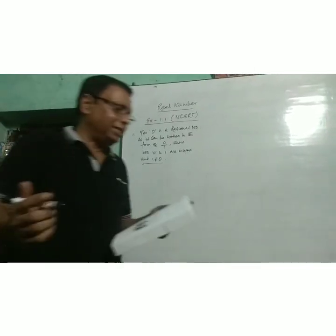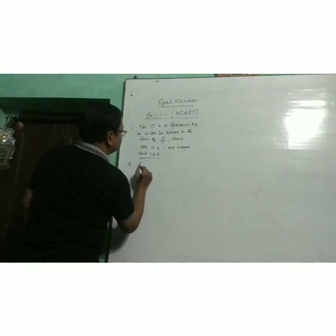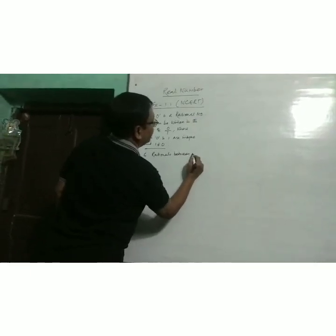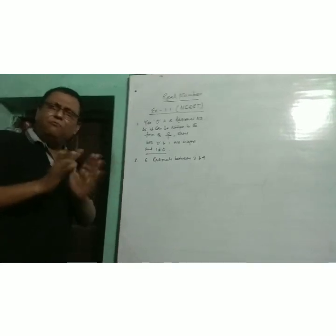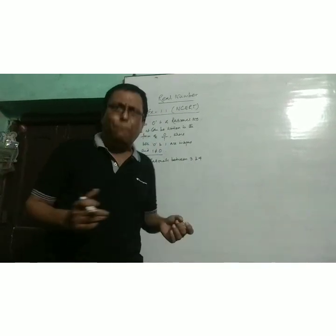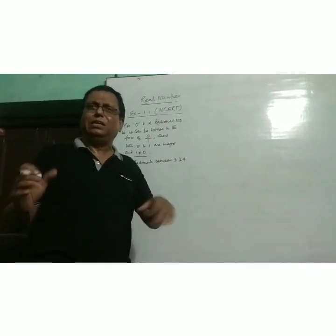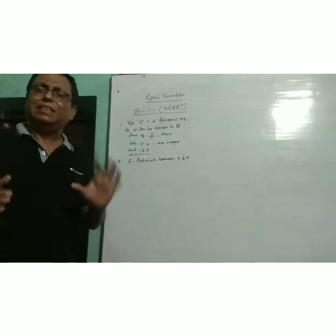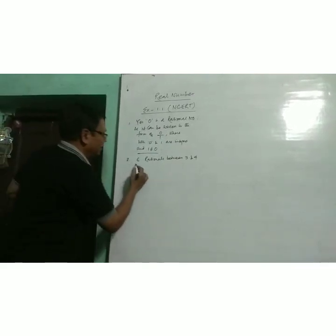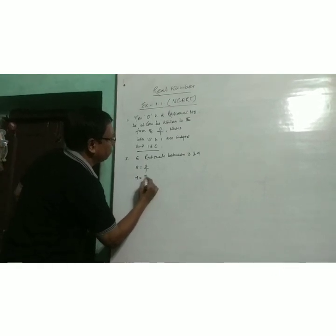Now come to the second question: find 6 rational numbers between 3 and 4. There are infinitely many methods to find rational numbers between two rational numbers. I will suggest one method which is very convenient — the equalizing the denominator method. We write 3 as 3 by 1 and 4 as 4 by 1.